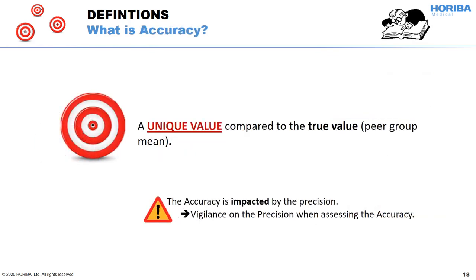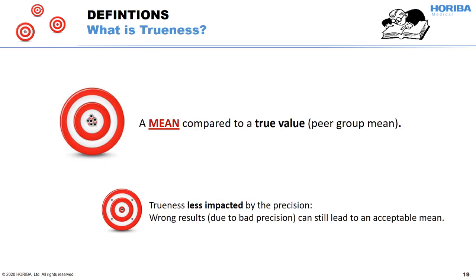Accuracy is the comparison between one unique value and the true value. But as you have only one unique value, a lack of precision could directly impact the results. It is then highly recommended to check the precision before assessing the accuracy. Trueness is the comparison between a mean of results and the true value. But if we have several imprecise results, the mean could still be acceptable — so the mean is not really impacted by the precision of the results.